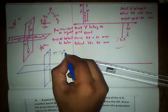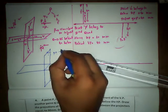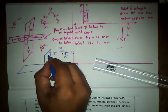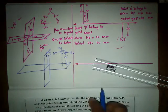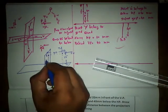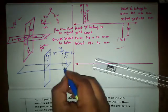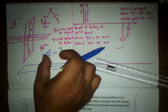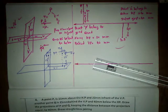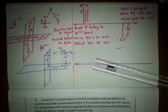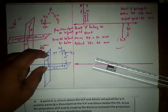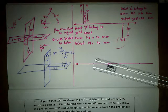Now we need to check the front view and the top view. The front view is going to be P'. This distance is 15mm — the opposite distance. Looking at the top view, we get p here, with the opposite distance being 20mm. The front view P' is above the XY reference line at a distance of 15mm.